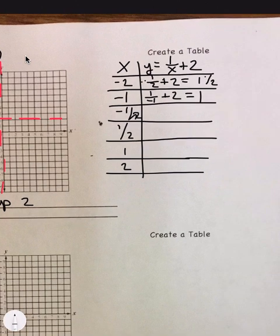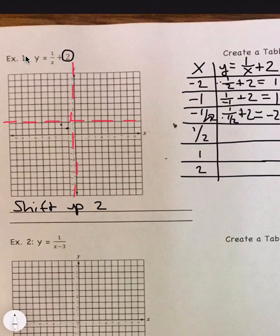And then at negative 1 half. So 1 divided by negative 1 half, that is then plus 2 is equal to negative 2 plus 2, which is 0. So negative 1 half, I am at 0. And so then I can just draw it in as best as you can.